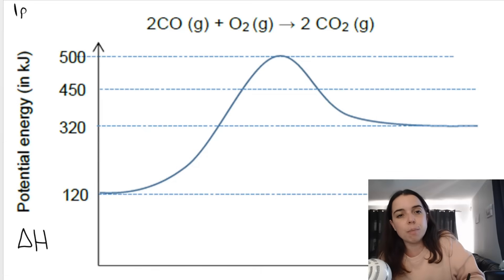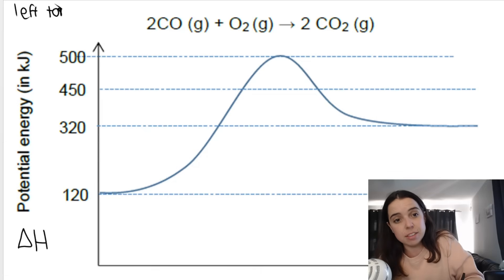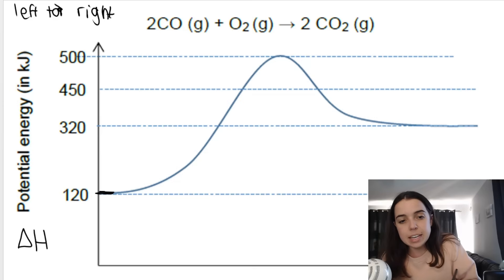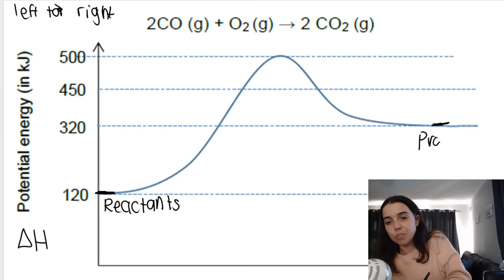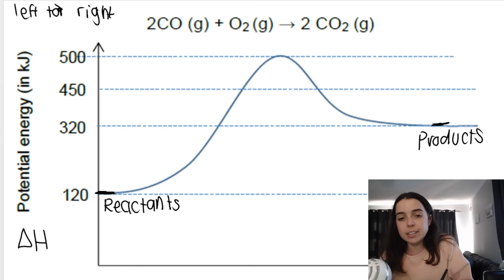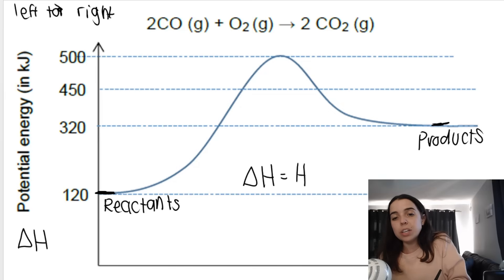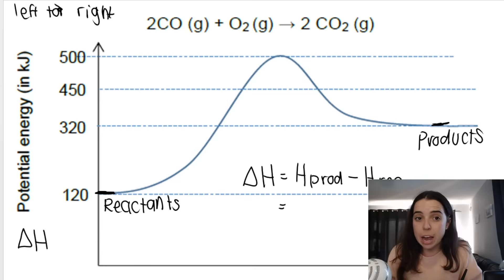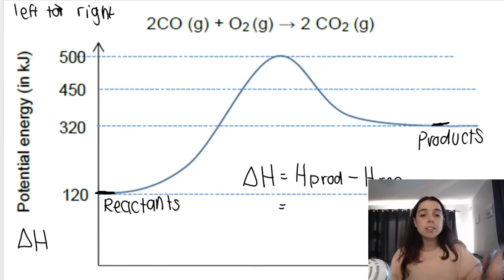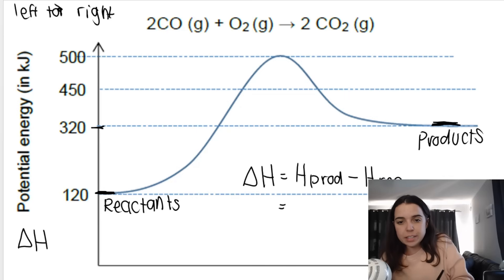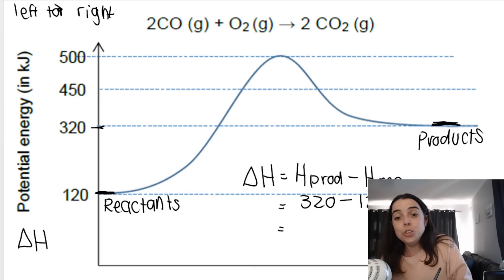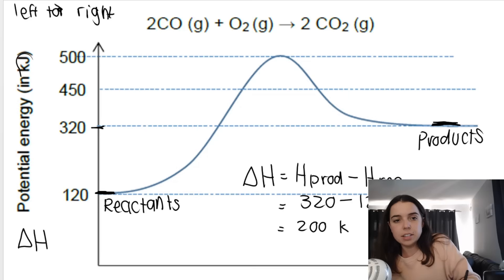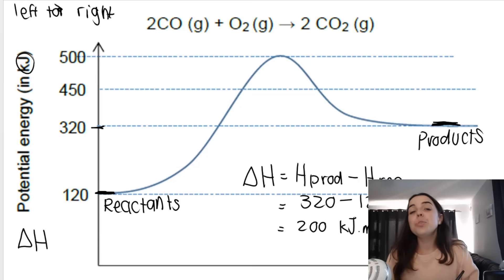For the forward reaction we read from left to right — these are the reactants and this side is the products. Using the formula: energy of products minus energy of reactants. For the forward reaction, the energy of the products is 320 minus the energy of the reactants, 120, giving us 200 kJ/mol. That is the delta H for the forward reaction.